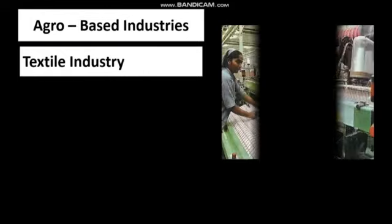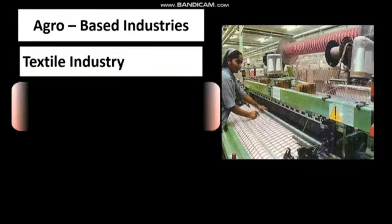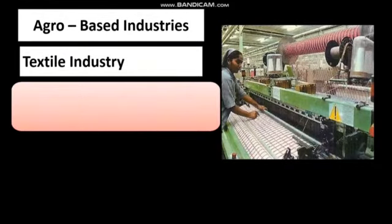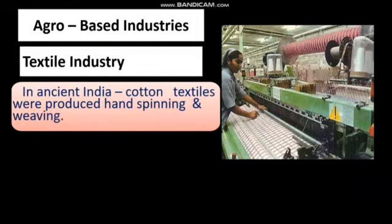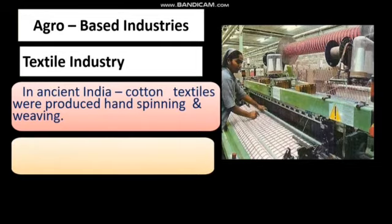In the previous video we discussed that industries which obtain their raw material from agricultural products are known as agro-based industries. Cotton, jute, silk, woolen textiles, sugar and edible oil — these industries are based on agricultural raw materials and are known as agro-based industries.